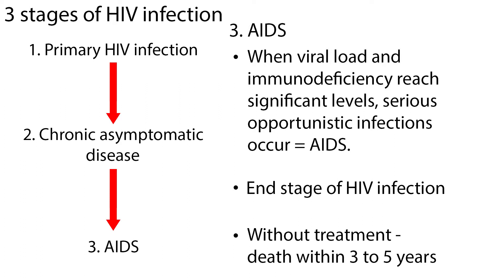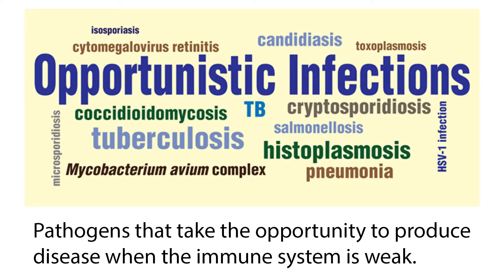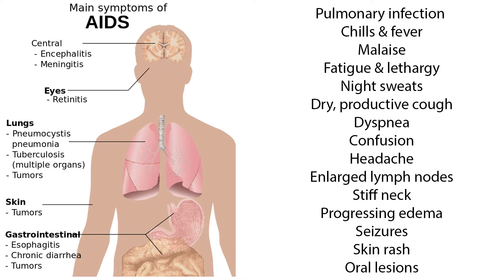AIDS is the end stage of HIV infection, and without treatment, death will occur in 3–5 years. Opportunistic infections are pathogens that take the opportunity to produce disease when the immune system is weak. Most symptoms associated with AIDS are from opportunistic infections and can affect every organ and body system.